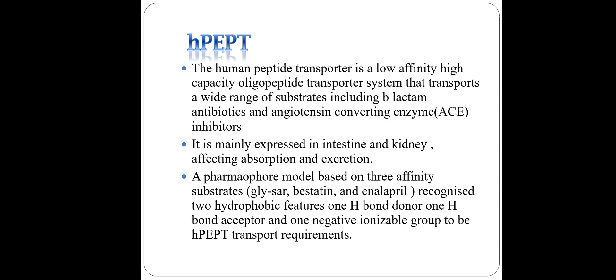The second transporter is the human peptide transporter (HPEP), which is a low-affinity, high-capacity oligopeptide transporter that transports a wide range of substrates including beta-lactam antibiotics and ACE inhibitors. It is mainly expressed in the intestine and kidney, affecting absorption and excretion. A pharmacophore model of HPEP has also been prepared, showing structural requirements of two hydrophobic features, one hydrogen bond donor, one hydrogen bond acceptor, and one negative ionizable group.